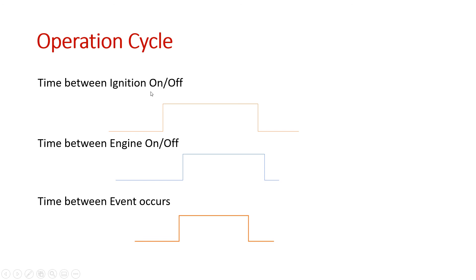In some projects — for example, infotainment or cluster — the ignition is the operation cycle. In a powertrain project, which is all about the engine and transmission system, the operation cycle will be the engine, not the ignition. You have to categorize based on your project and objective. Infotainment is not dependent on the engine — ignition on/off is enough for infotainment. Engine on/off is required for engine modules and safety modules. For purely infotainment, ignition on/off applies; for powertrain, engine on/off applies.